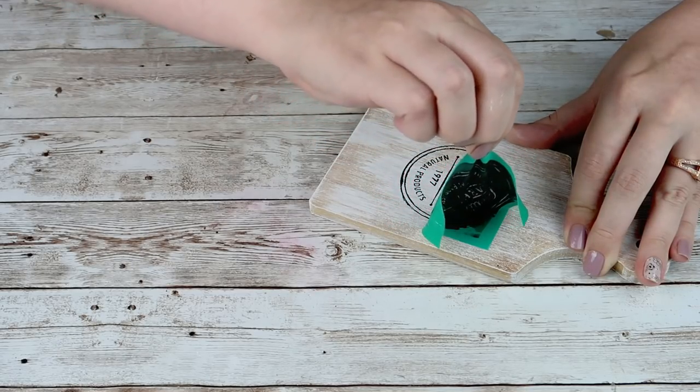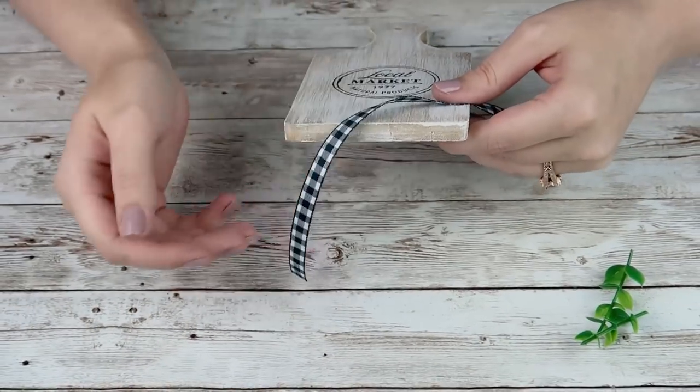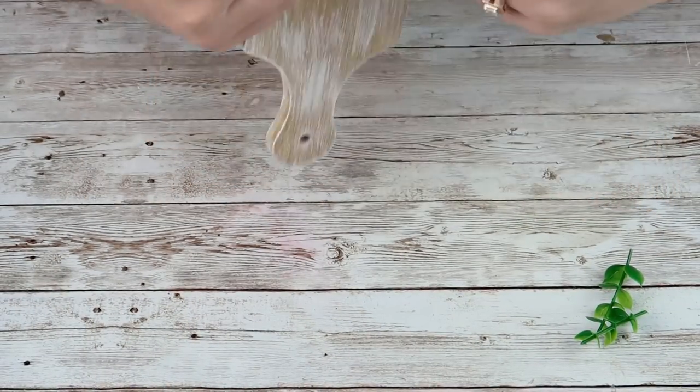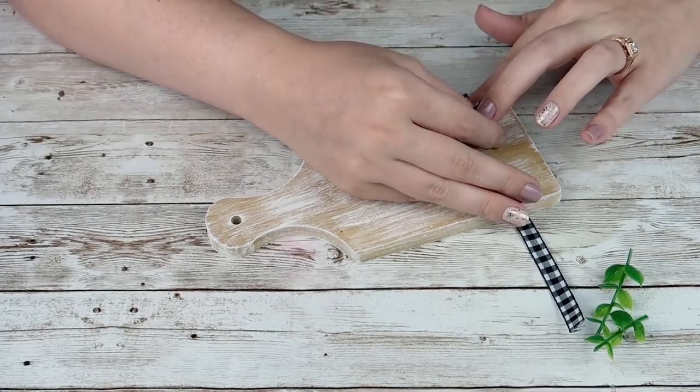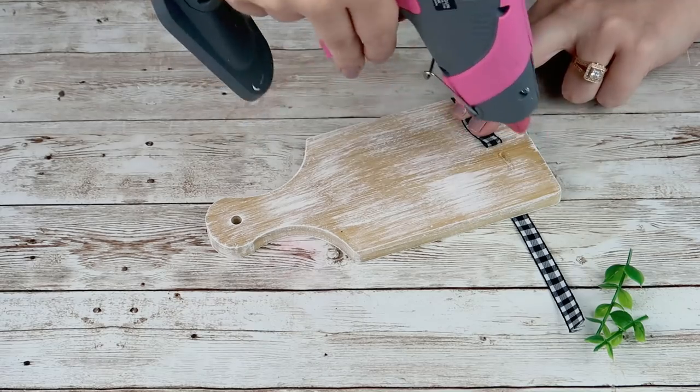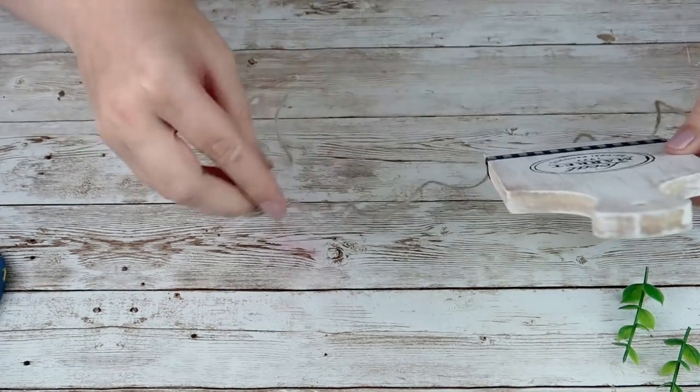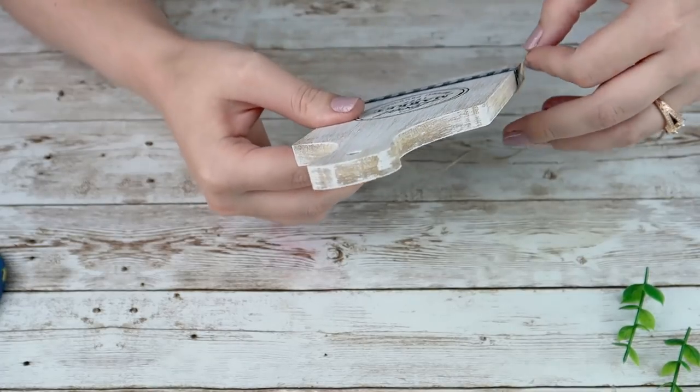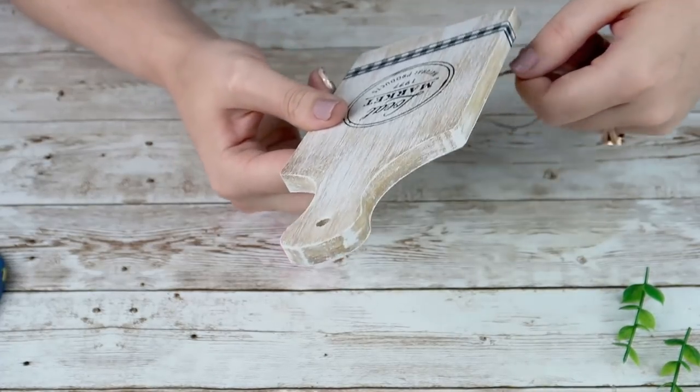Next I'm going to take some buffalo check ribbon and I just wrapped it around the bottom and hot glued the ends to the back. Then I'm going to take some twine and wrap that around the bottom of my cutting board a couple of times and tie it in a double knot.